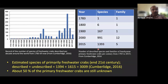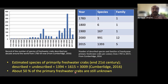The number of species continues to increase as more people work on freshwater crabs. Projections by the global authority on freshwater crabs, Cumberlidge, suggest that towards the end of this century we may add around 2,600 species, meaning the total could cross 3,000. There is also a general belief that about 50% of primary freshwater crabs are still unknown, as many freshwater habitats have never been exclusively surveyed for them.